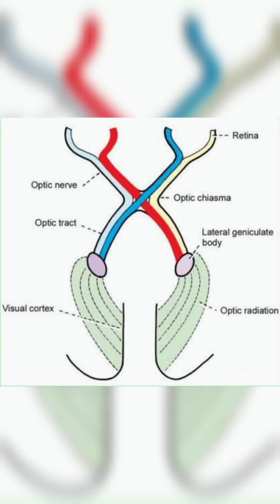The optic radiation begins in the lateral geniculate body and passes through the retrolentiform part of the internal capsule, ending in the visual cortex. The last one is the visual cortex, which is the optic radiation in the striate area. Here, color, size, shape, motion, illumination, and transparency are appreciated separately.